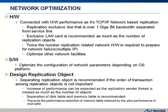Creating replication objects by separating disk tables and memory tables is also recommended to improve performance. The transaction processing of memory tables is faster than disk tables. However, if both are added in a single replication object, the performance of the memory table can be reduced by the disk table. When separating replication objects, the transaction order has to be considered, because when transaction order has more priority, it is hard to separate replication objects.